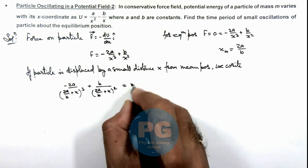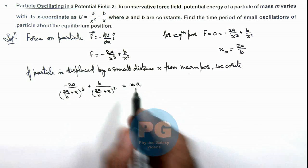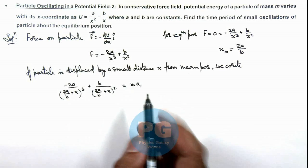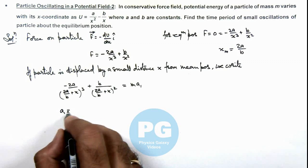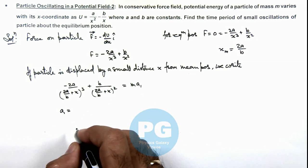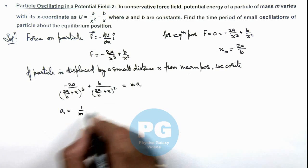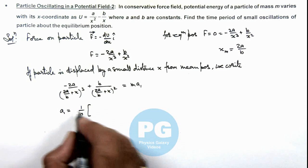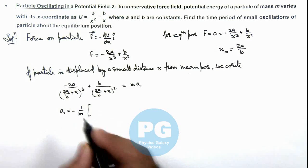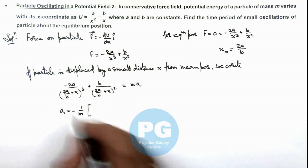This expression equals ma₁, where a₁ is the acceleration of the particle and m is its mass. So we have written the equation of motion like this, which in turn gives the acceleration of the particle a₁.